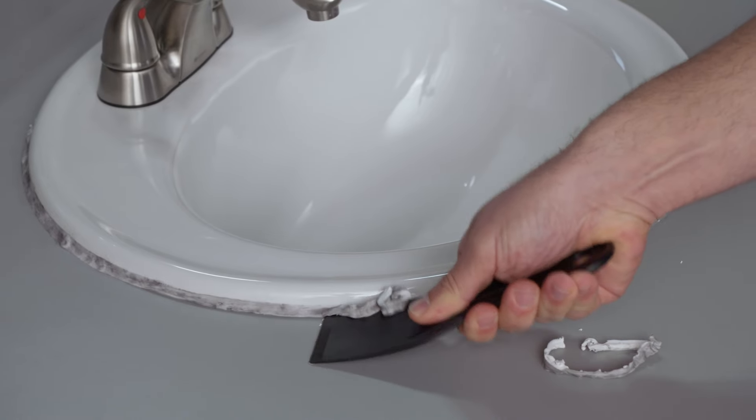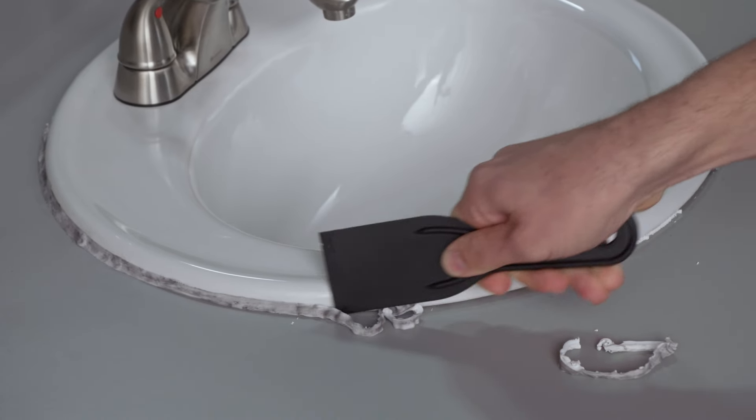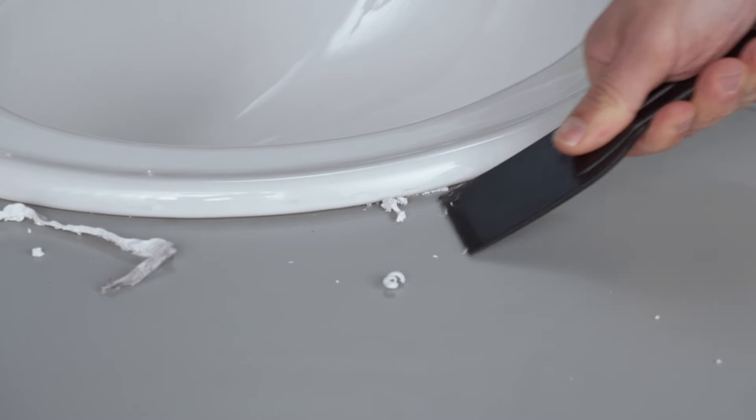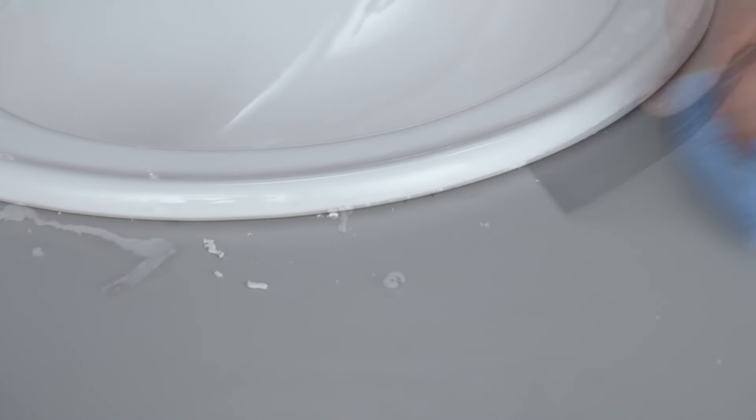Before you start caulking, remove any old caulk by using a tool that won't damage the surface, like a plastic putty knife. Also, make sure the area is clean and free of any grease, dirt or debris.